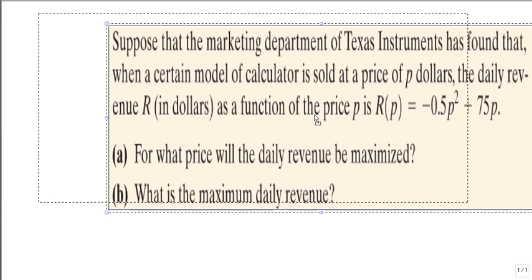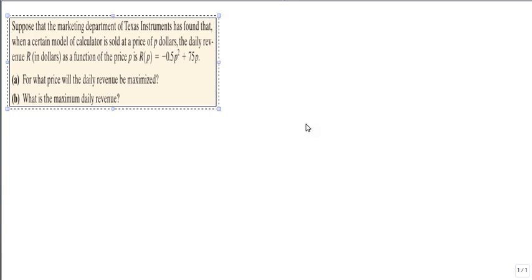We also want to show this in a real-world application. The Marketing Department of Texas Instruments has found that when a certain model of calculator is sold at a price of p dollars, the daily revenue r in dollars as a function of the price p is r(p) = -0.5p² + 75p. It's clear we're going to have a maximum because our a is negative.